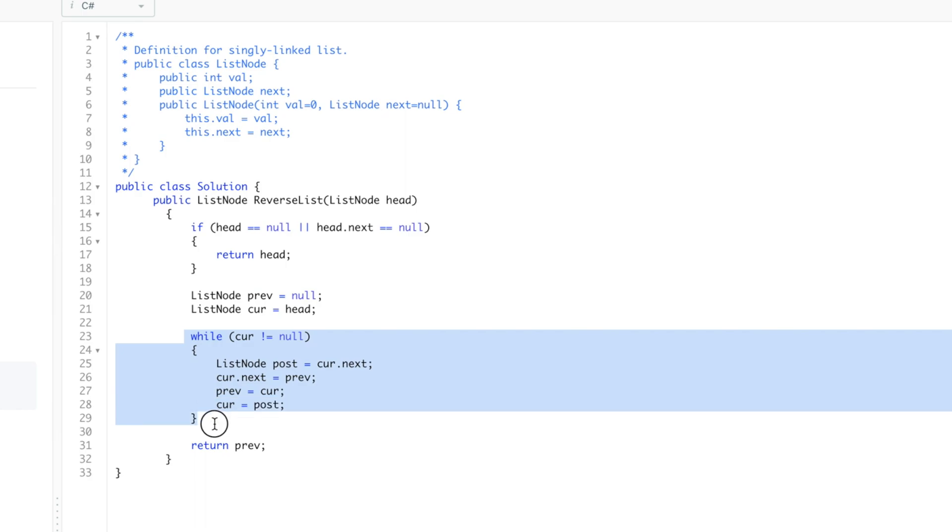Once the loop starts, this loop will run until our current is not equal to null. Then on line 25, we use this post variable that is temporarily holding the next value or the next node. Then we update our current values next to the previous one that we iterated. So in the first iteration, the previous will be empty. So in the list after my current node, we will have null.